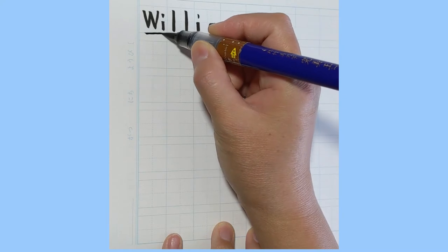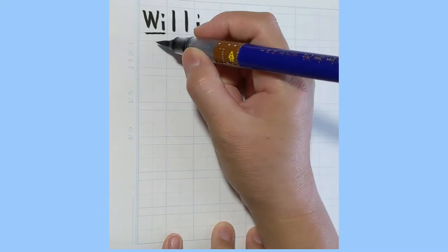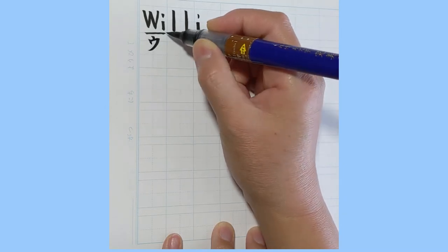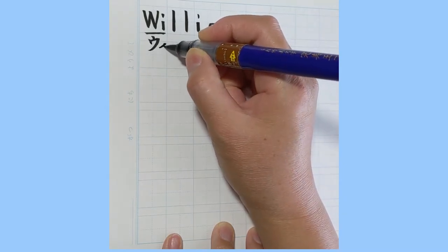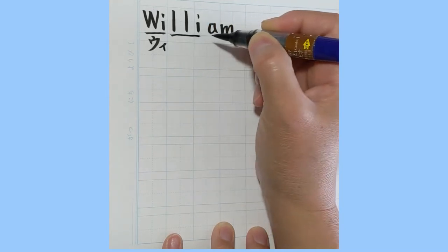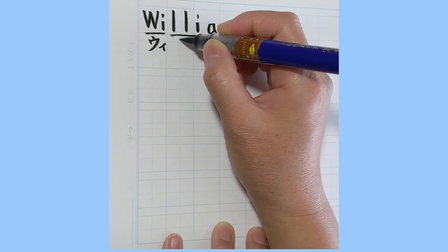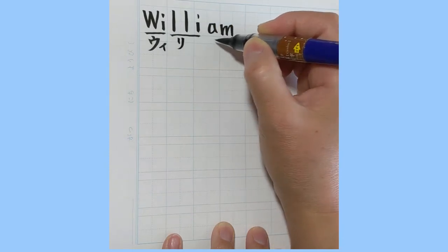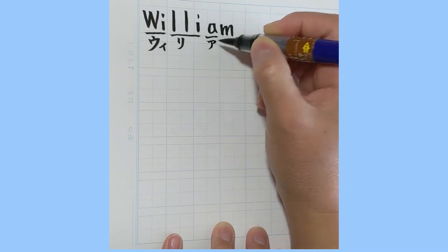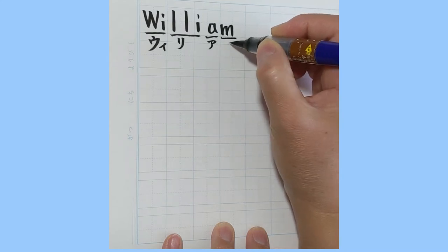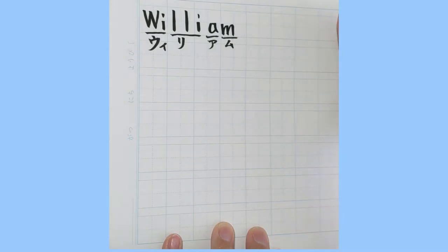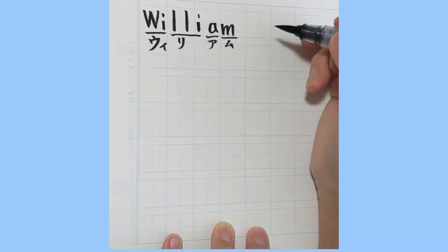ウ (U) in katakana. イ would be a little small i there. リ — L-L-I would change to リ. ア is ア. ム — M-U sound there. Okay? So, William.